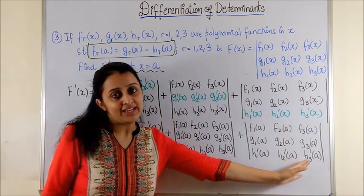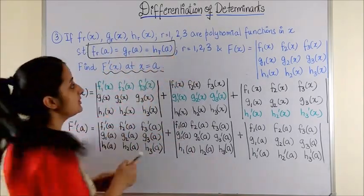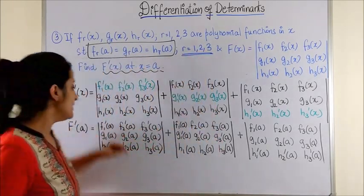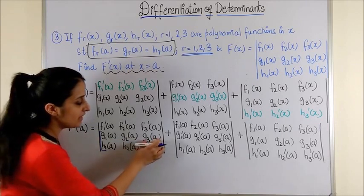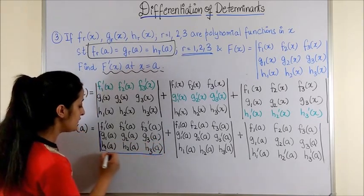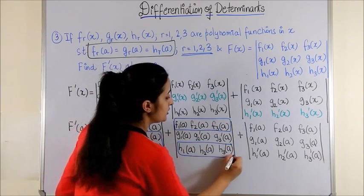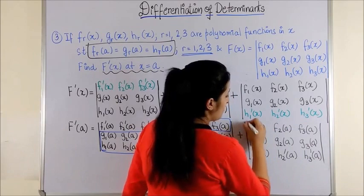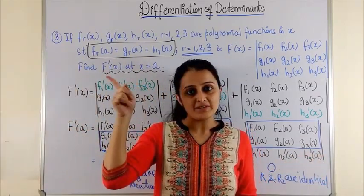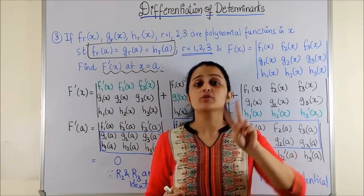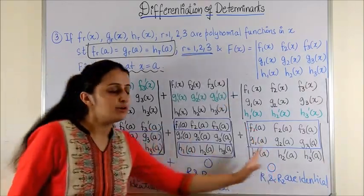So once we replace our x with a, something really magical happens here, which is—remember we highlighted this condition which is true for all r = 1, 2, and 3. So here if you see, your g₁(a) would be the same as h₁(a), g₂(a) would be the same as h₂(a), likewise g₃(a) is the same as h₃(a), which makes these two rows the same. Similarly for the next determinant, you would get your first and third rows to be the same, and likewise for the third determinant, your first and second rows happen to be the same.